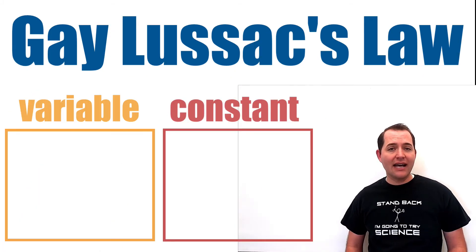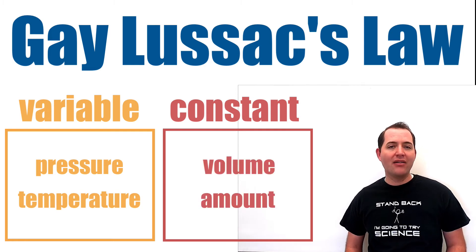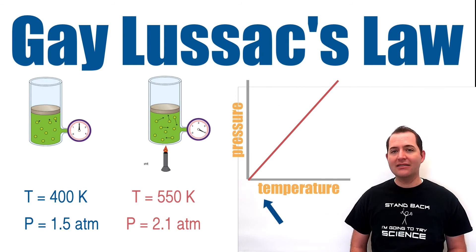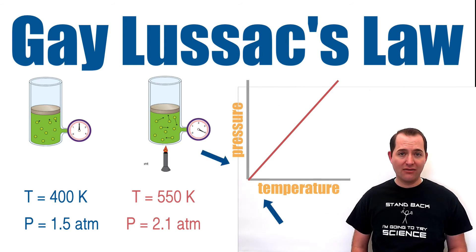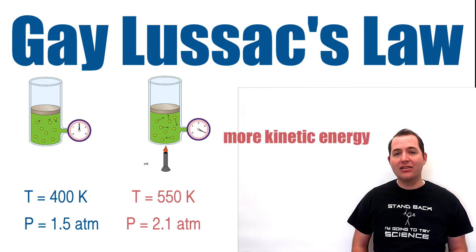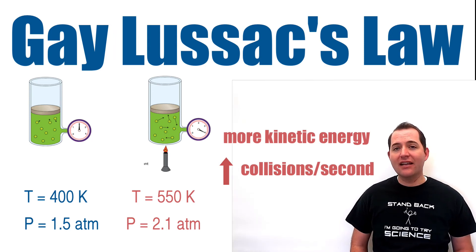Gay-Lussac's law is a gas law that relates pressure and temperature. When we keep volume and the amount of gas constant, pressure and temperature are directly proportional. As the temperature of a gas increases, so does its pressure. And if we decrease the temperature of a gas, its pressure will also go down. If you heat up the particles of a gas, they will gain more kinetic energy or they will move faster. This increases the number of times per second that particles will be hitting the surface of the container, which is what causes the increase in pressure when the temperature goes up.